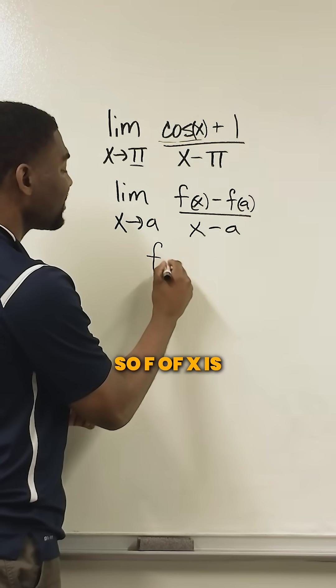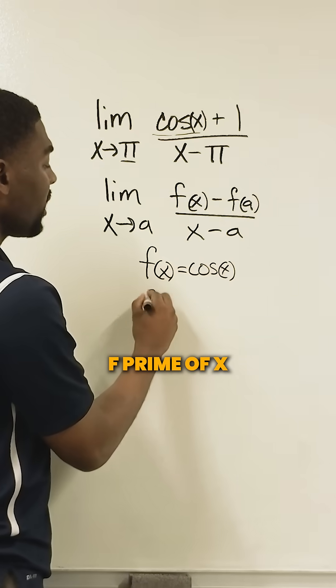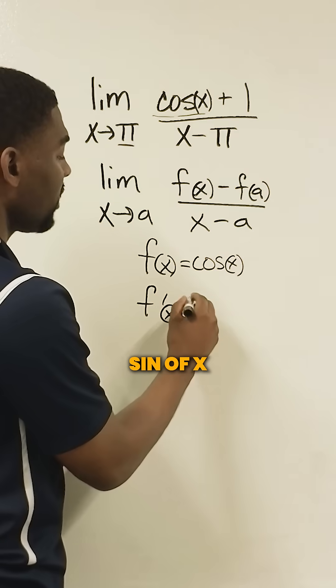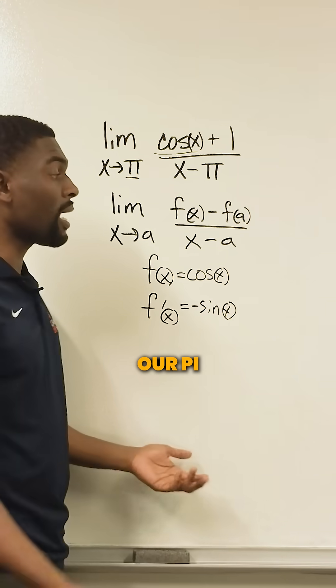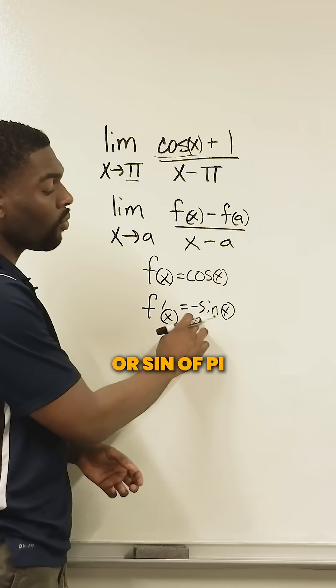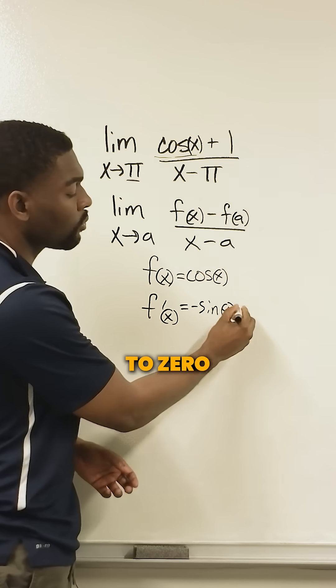So f of x is our cosine of x. F prime of x is negative sine of x. And now we simply plug in our pi, and sine of pi is equal to zero.